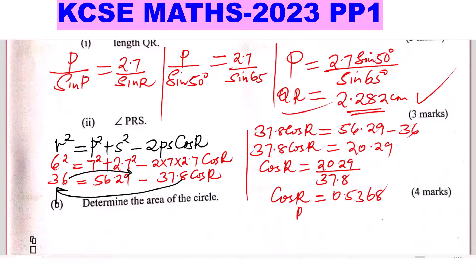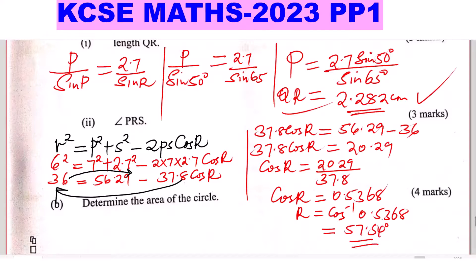To get R, take the inverse cosine of 0.5368, which gives 57.54 degrees. That is angle R, which is also angle PRS — the angle we were looking for.